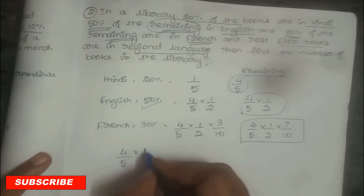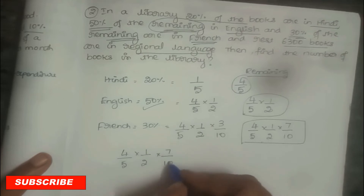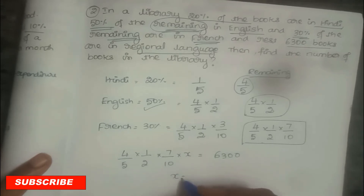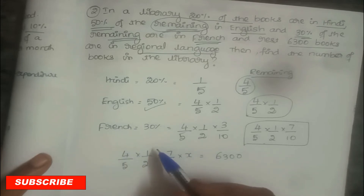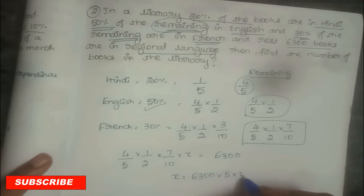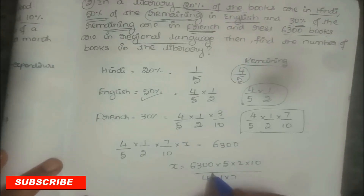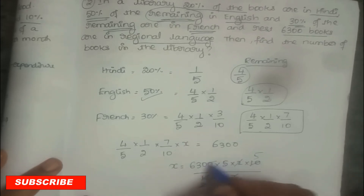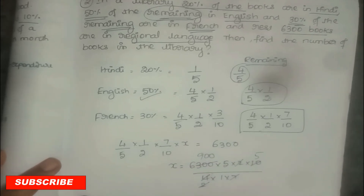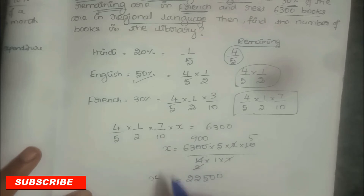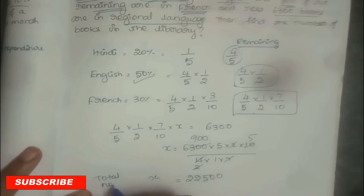So: (4/5) × (1/2) × (7/10) × X = 6,300, where X is the total number of books. Rearranging: X = 6,300 × 5 × 2 × 10 ÷ (4 × 1 × 7). The total number of books in the library is 22,500.